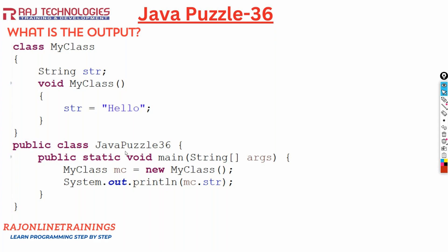Coming to the main method of class JavaPuzzle36, here we are creating an object of MyClass: MyClass mc equal to new MyClass. After creating the object, we are printing the value mc.str, meaning we are taking the value of this string and printing that value using the object.